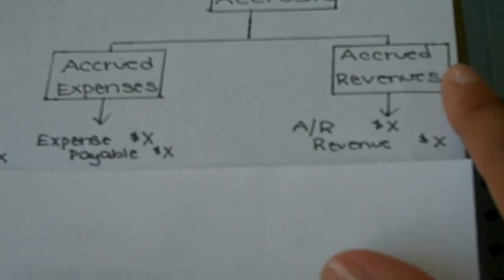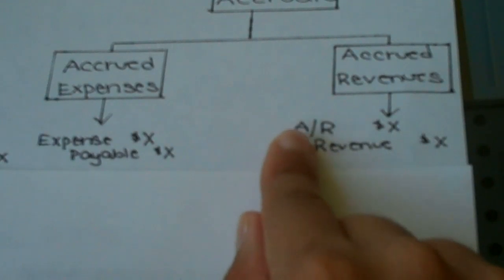Then we have accrued revenues, an item that we have not yet received. You'll go ahead and increase some sort of receivable. I've just left it generic here as accounts receivable. If it was interest, you would say interest receivable; taxes receivable, whatever type of revenue you are going to be receiving.